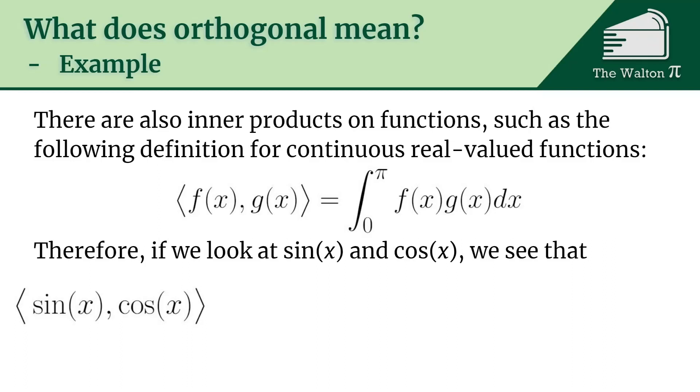If we were to look at sine of x and cosine of x, in the linear algebra dot product sense there's not really a way of being able to say if these are orthogonal to each other, if they come together at right angles, because these are functions, they're not vectors. But in this space on these functions, we can look at the inner product of sine and cosine.